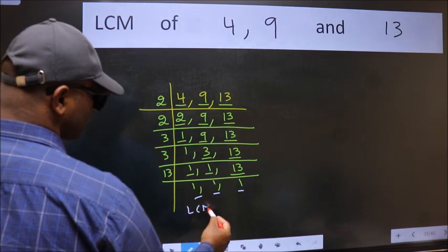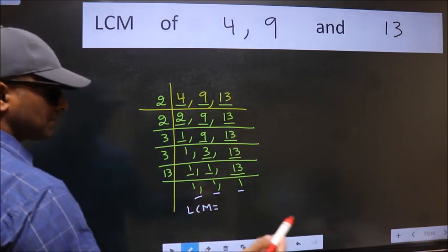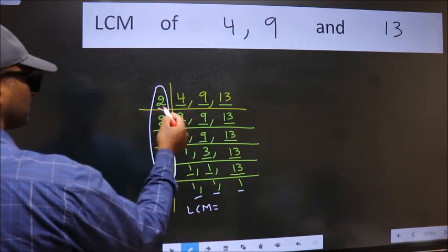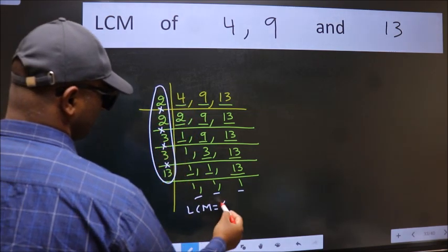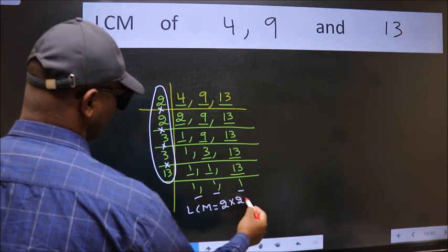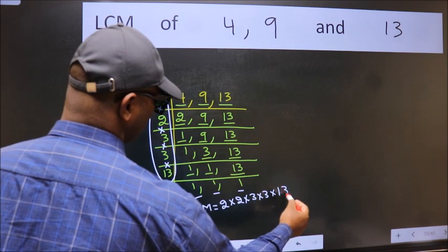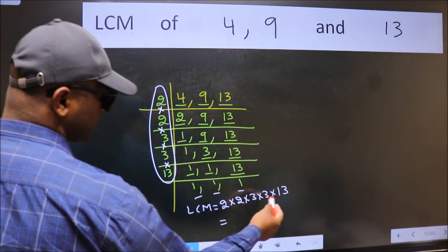So our LCM is the product of these numbers. That is 2 into 2 into 3 into 3 into 13. When we multiply these numbers, we get 468 as our LCM.